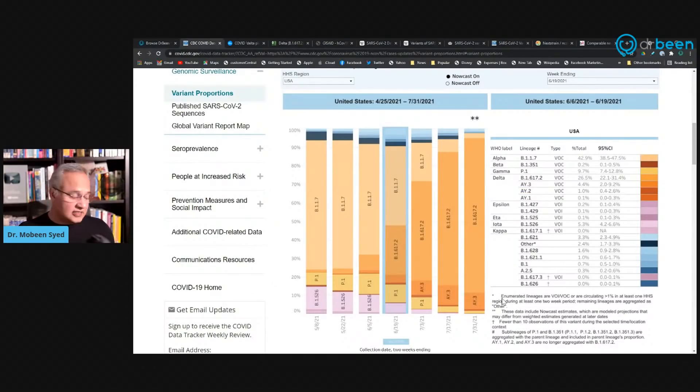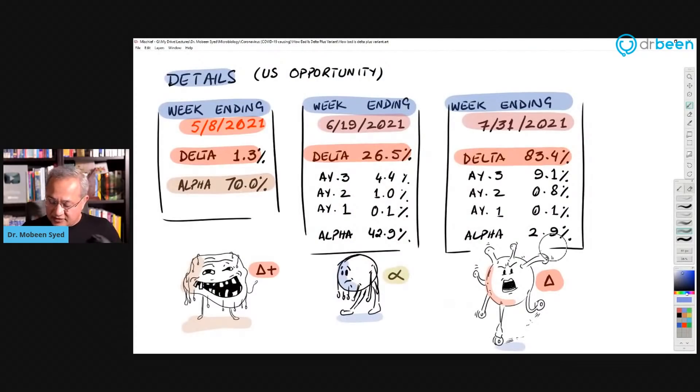So I put some data together here. So let's look at it. It is the data coming from the same table. So on the week ending 5-8, 2021, Delta was 1.3% and Alpha was 70%. So Alpha was dominant. Delta was just starting. If Delta plus was so bad, then Delta plus, when that started, it will grow similar to Delta or better. But if you see here at 731, Alpha is almost out 2.9%. And it is replaced with 83.4% Delta. And the Delta pluses AY3 is now 9.1%. Others are still below 1%.